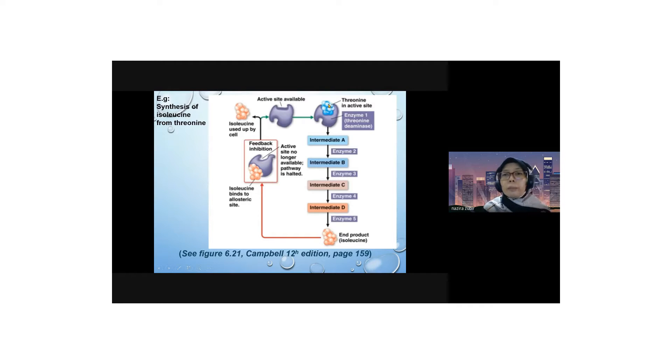In the normal pathway, threonine as the substrate binds to the active site and produces four intermediates before forming the end product, isoleucine.